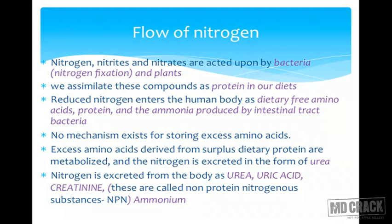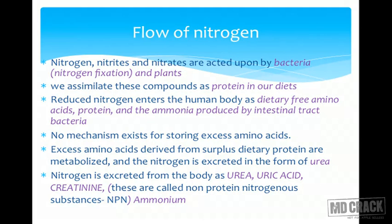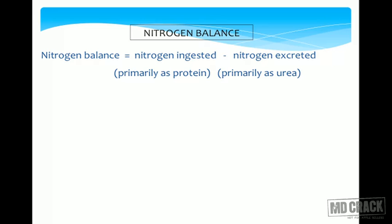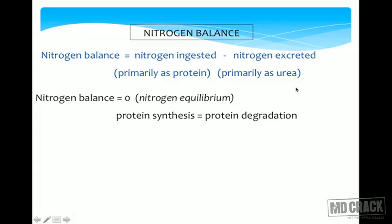It is important that nitrogen be balanced within the body. Nitrogen balance is defined as: nitrogen balance equals nitrogen ingested minus nitrogen excreted. How much is taken in, how much is thrown out. Nitrogen ingestion is mainly in the form of protein and nitrogen excretion is mainly in the form of urea.